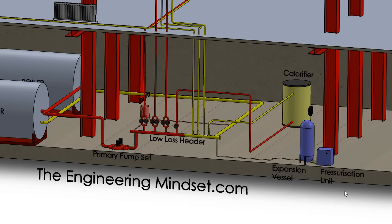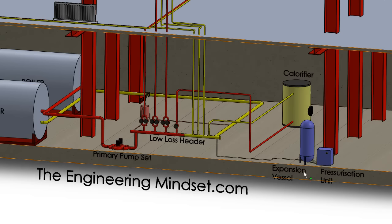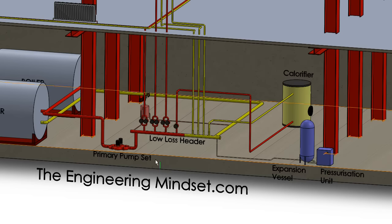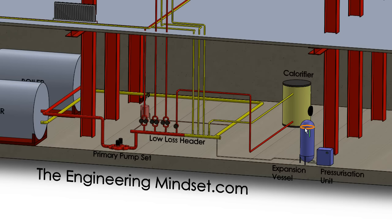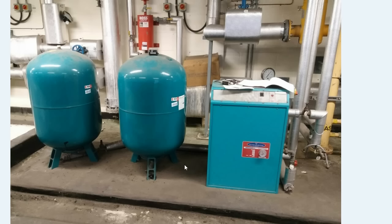So this expansion vessel and the pressurization unit is plugged in somewhere around the low loss header — there are a couple of places it could be, but it's usually located here. And that's just looking at the pressure there and reacting to it. So if it gets too high, then the expansion vessel will take some of that, and when it gets too low the pressurization unit will force that back into the system to equalize it. The pressurization unit will probably look something like this, where you've got the expansion tanks and vessels over here, and then the main pressurization unit just there as well.